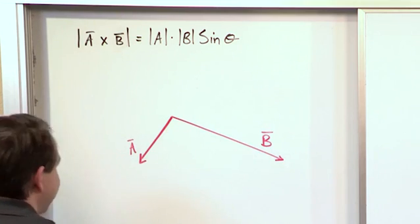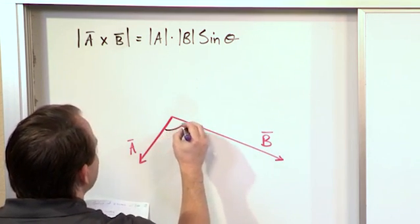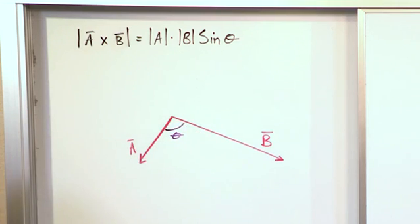Now these vectors exist in three-dimensional space, and there is an angle between them, a direct angle between them, that you call theta. All right?